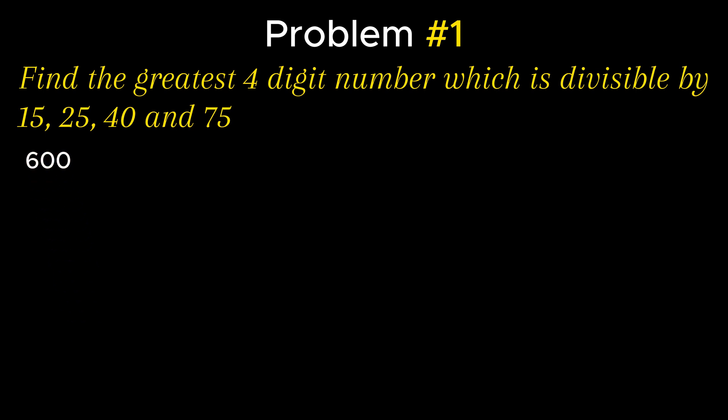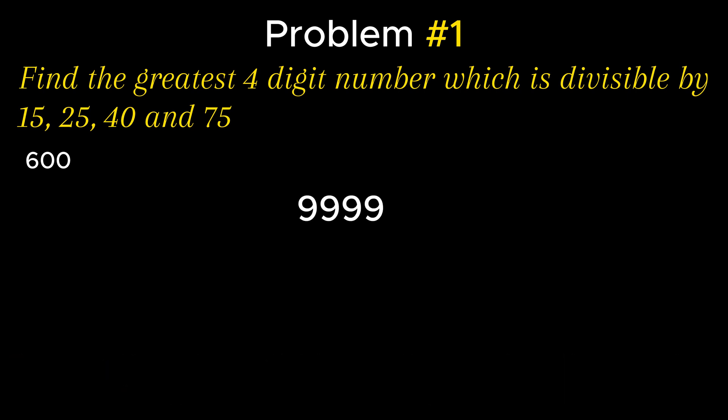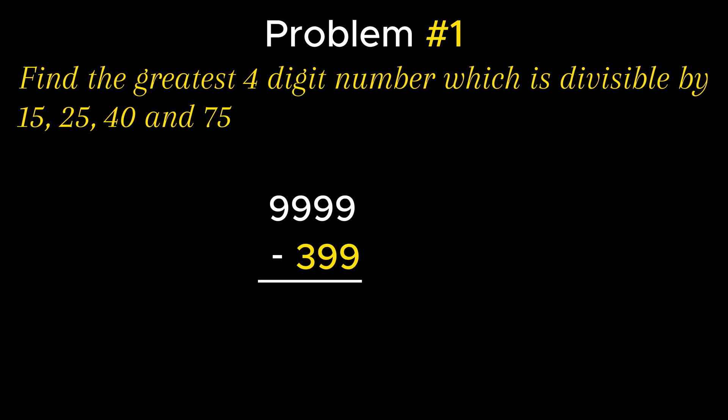The LCM equals 600, but 600 is not a four-digit number. As 600 is the smallest number that comes in the table of 15, 25, 40, and 75, all multiples of 600 will also be divisible by these numbers. The greatest four-digit number is 9,999. On dividing 9,999 by 600, we get 399 as remainder. So subtracting the remainder from 9,999, the required number is 9,600.